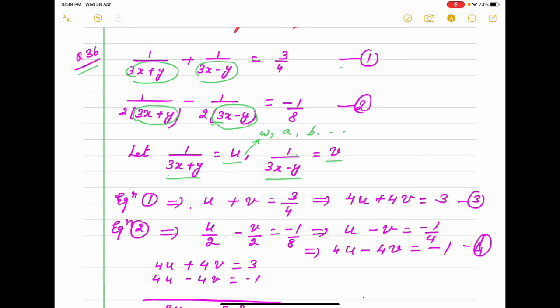The equation becomes u+v = 3/4. If we simplify like this, 4u + 4v = 3. Second equation is 1/2, so u/2 - v/2 = -1/8. Again here if you cancel 2, it will be 4u - 4v = -1. Now these two equations we will simplify.